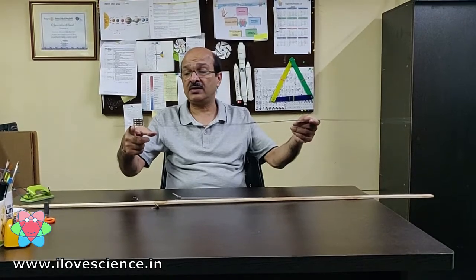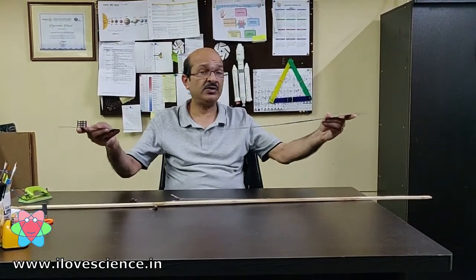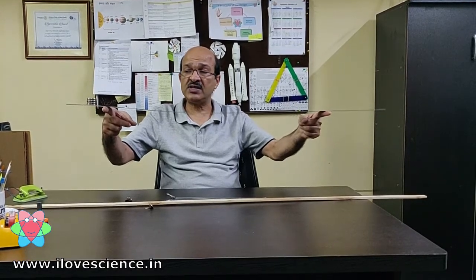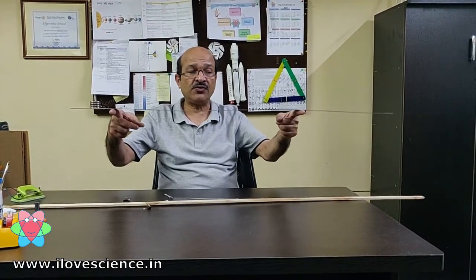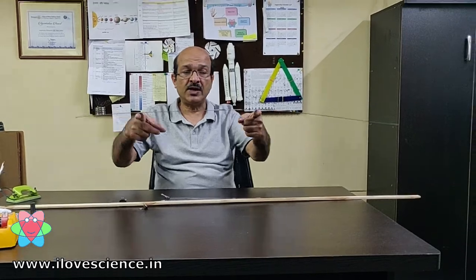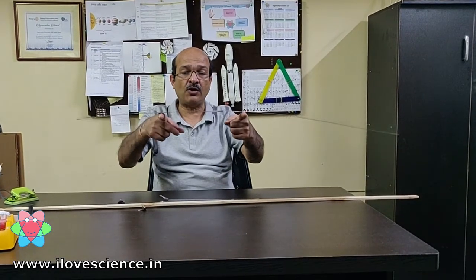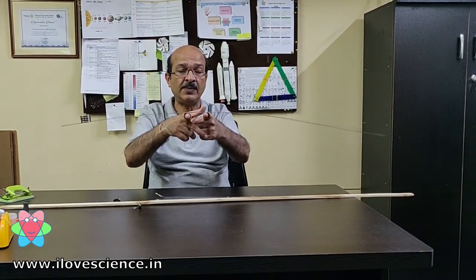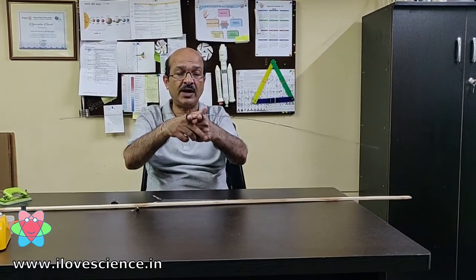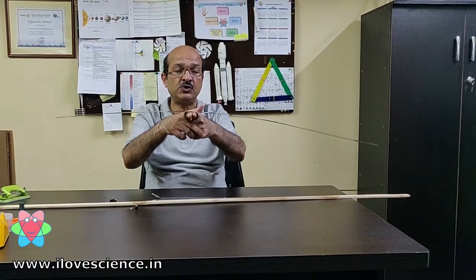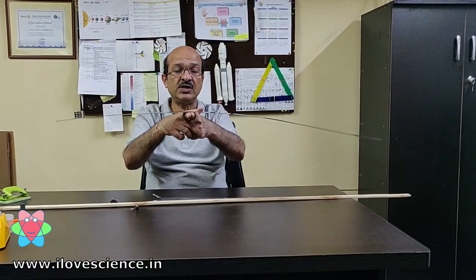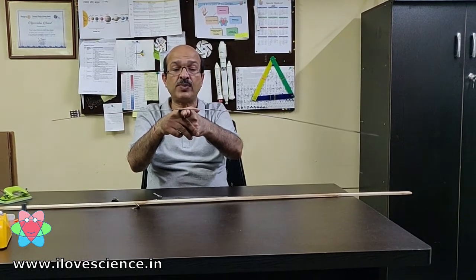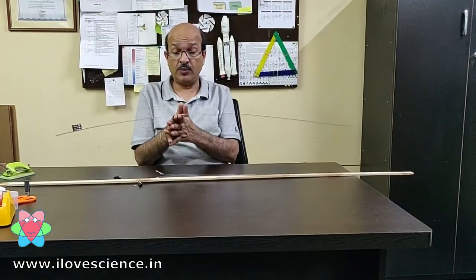Now if we have to find the center of gravity, I will tell you a very easy method. Put your fingers like this — one on each side — and then keep sliding them closer. You will see that automatically your fingers will move slowly and they will automatically meet at the new center of gravity of this scale, and I will be able to balance it here.